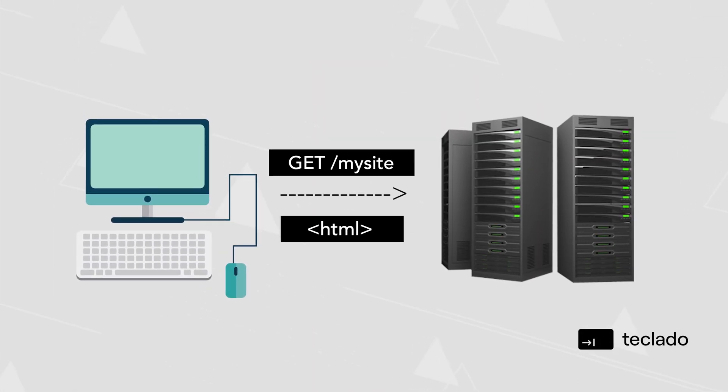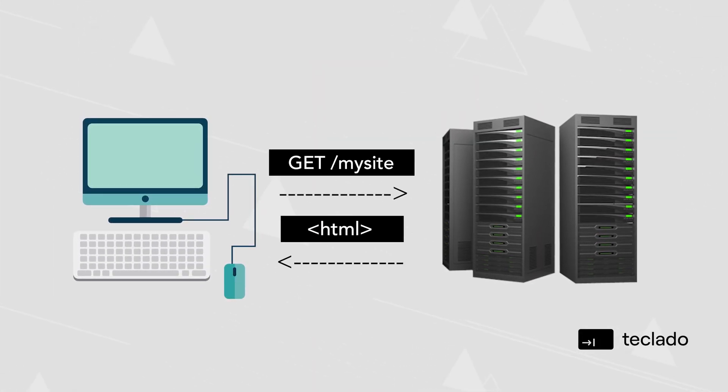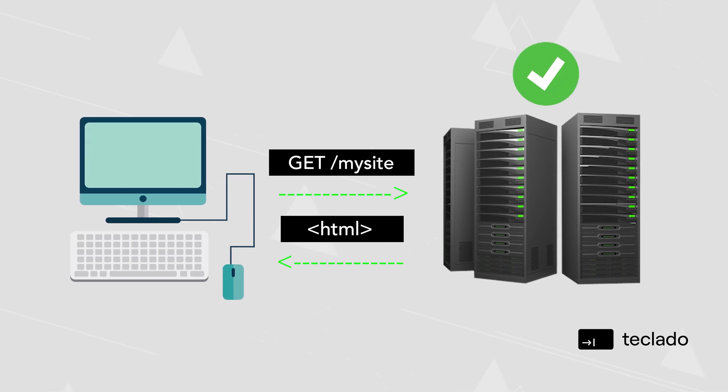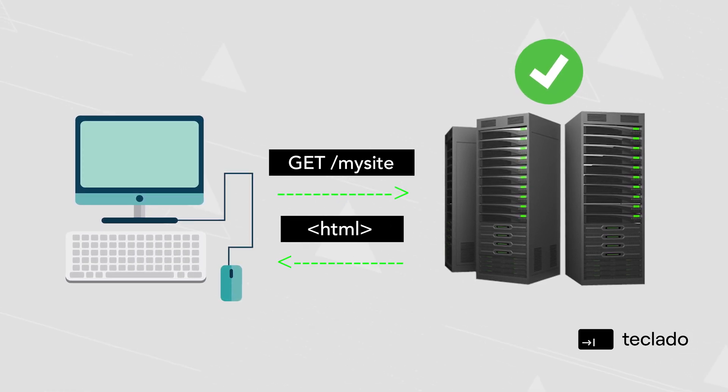We've learned that browsers make requests to servers — that is how they communicate. GET requests are normally used to retrieve data from a server. However, a request is just a few pieces of data itself that a browser sends to a server. The server then sees those pieces and hopefully understands what they mean. For example, the GET part of a request is just a string included in the request; when the server sees that, if it's programmed to respond to GET requests, then it can respond.